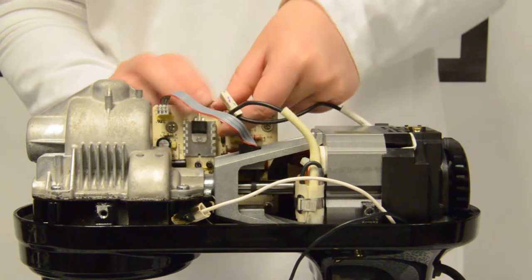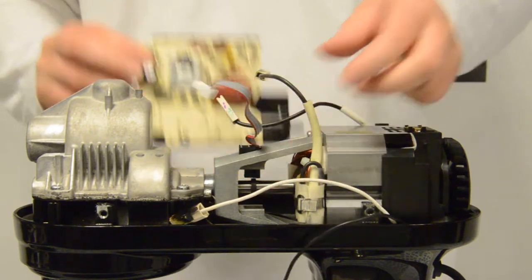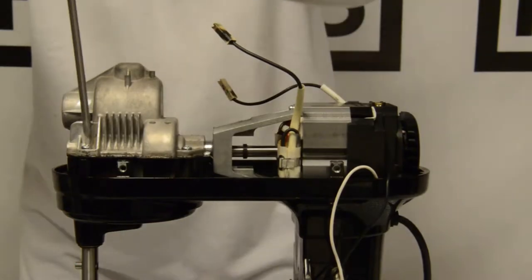We will also need to remove the hall sensor. We will be putting the same hall sensor onto our new motor. To remove this, you will need to press the clips down at the same time.